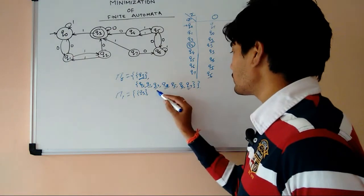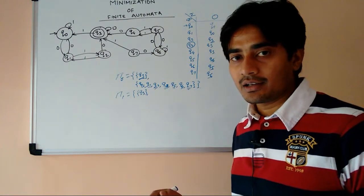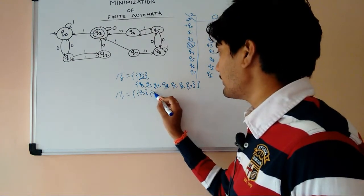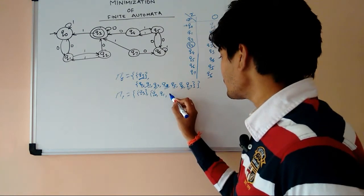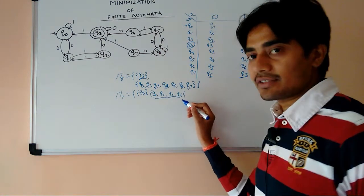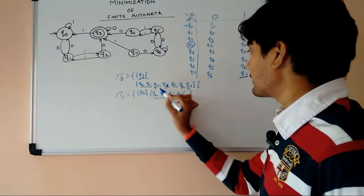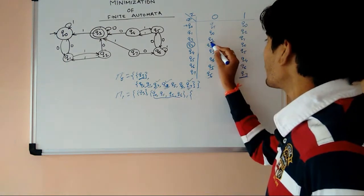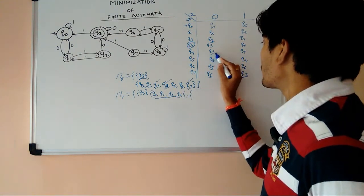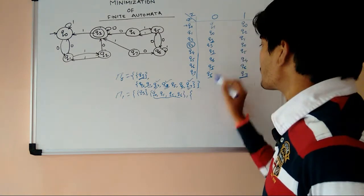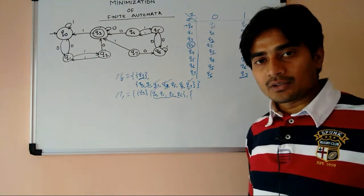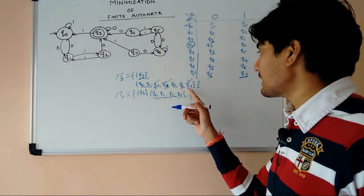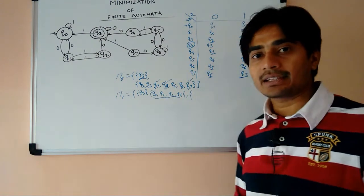So we find that Q2, Q4, and Q7 are in different sets than the other states. Now we check the group {Q2, Q4, Q7} more carefully. Q2 for 0 goes to Q3; Q4 for 0 goes to Q3; but Q7 for 0 goes to Q6. So Q2 and Q4 are 1-equivalent to each other, but Q2 and Q7, or Q4 and Q7, are not 1-equivalent.